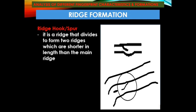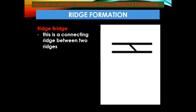Next is the ridge hook or spur — a ridge that divides to form two ridges, where the secondary branch is shorter in length than the main ridge. It is like a hook, where the main ridge is larger than the other. Next is the ridge bridge — a connecting ridge between two ridges that forms a letter H shape.